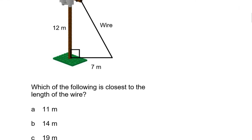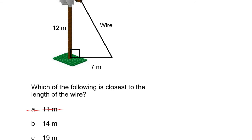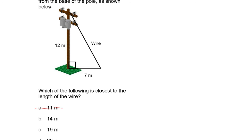It makes sense that the wire will be longer than the other two sides. So right away, can't we eliminate answer A? Answer A has a wire shorter than one of the other sides, and that doesn't make sense. This is one of the nice things about multiple choice — you can often eliminate some answers as possibilities. We're finding the longest side, so I'm going to call it w for wire.